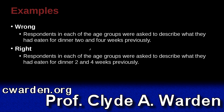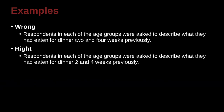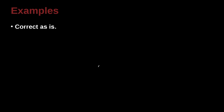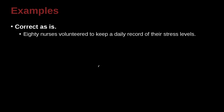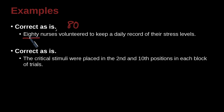Respondents in each age group were asked to describe what they had eaten for dinner 2 and 4 weeks previously. Again, we have a series of numbers inside the sentence and we're comparing them, so we're not going to spell them out but write the numeral. '80 nurses volunteered to keep a daily record of their stress levels.' Although 80 is bigger than 10, it's the first word in the sentence, and the first word in a sentence you always have to spell out. 'The critical stimuli were placed in the 2nd and 10th positions in each block of trials' — a series of numbers in the same sentence, so we use numerals even though one is smaller than 10.